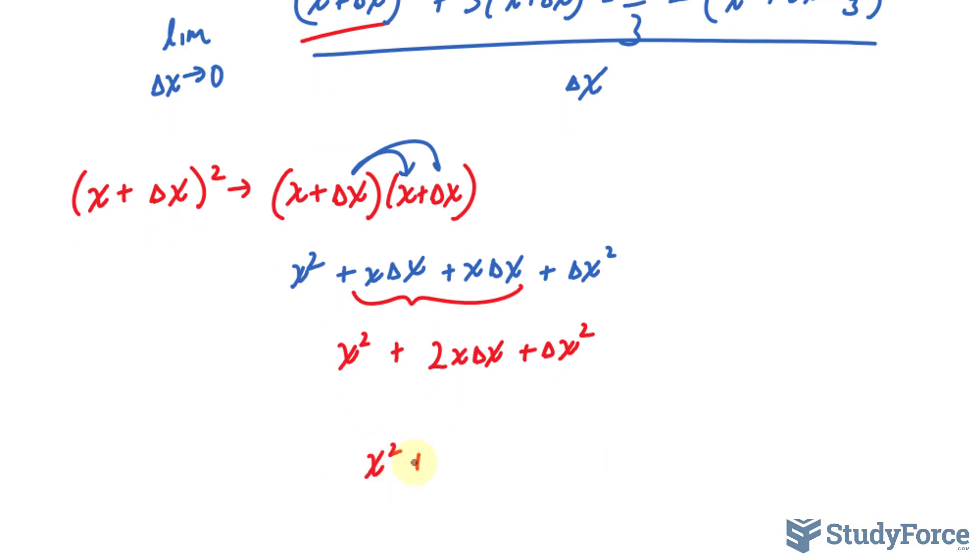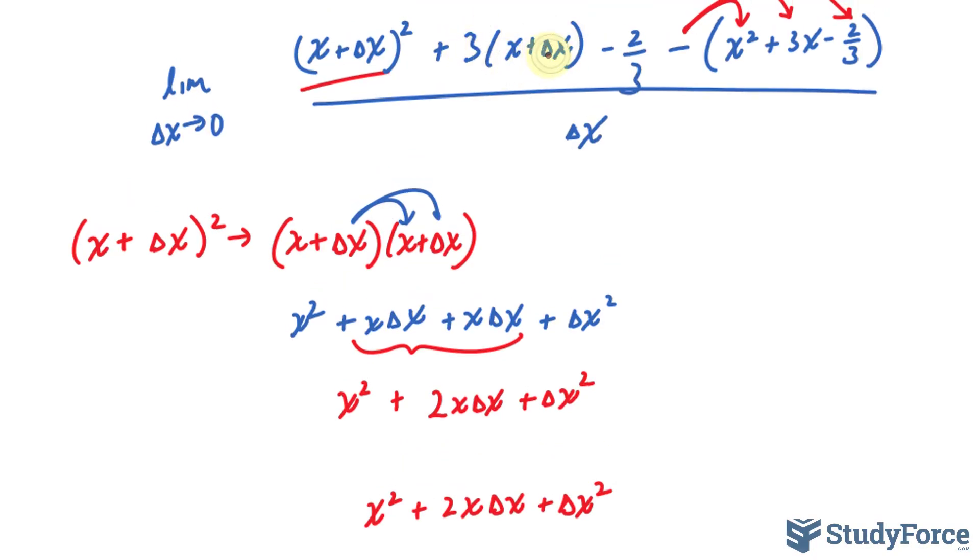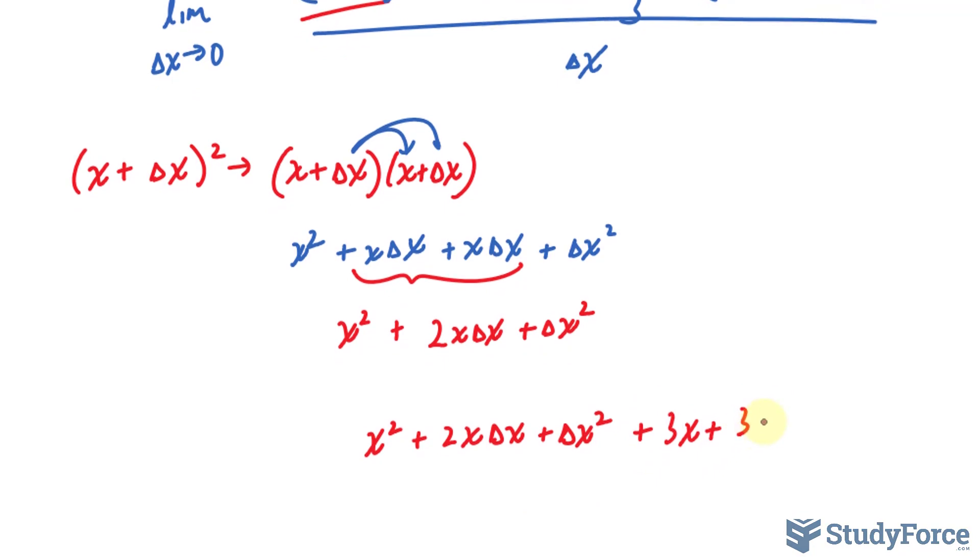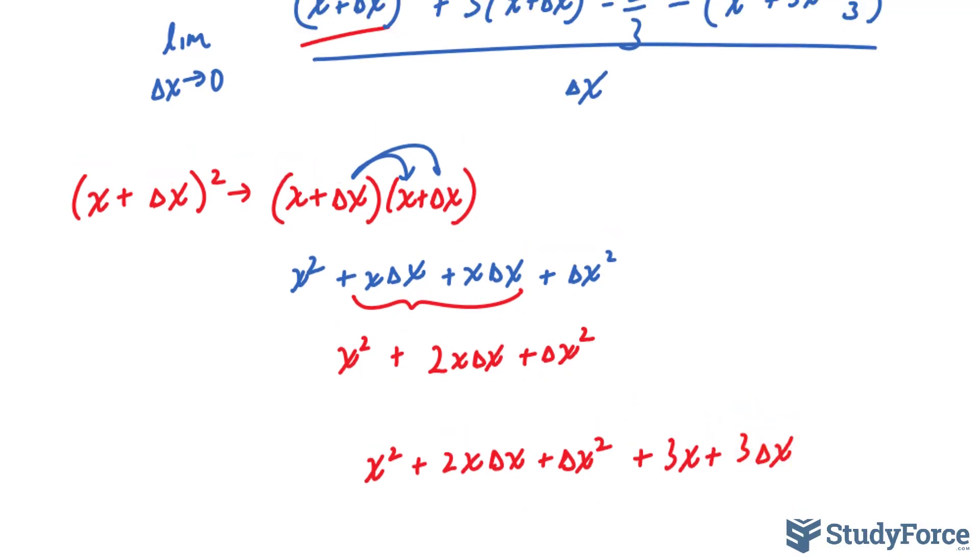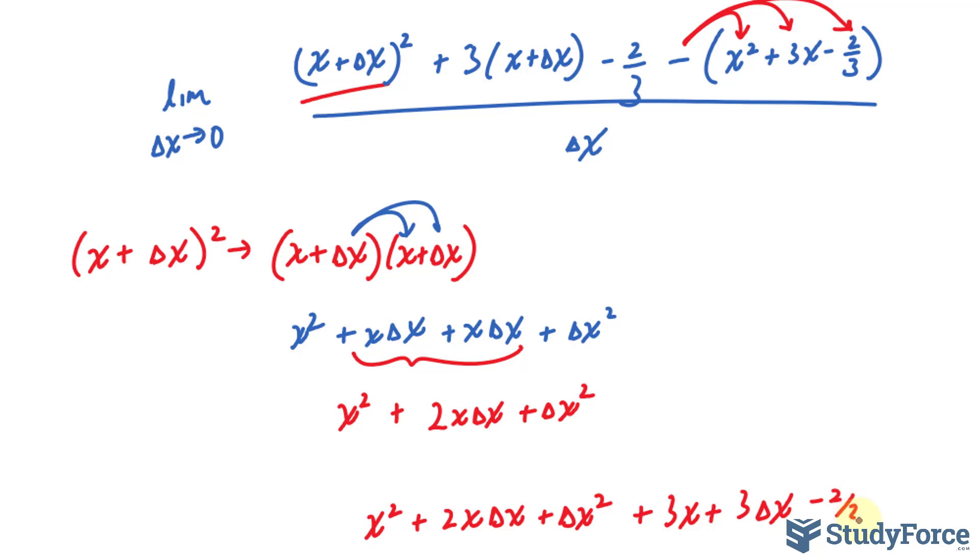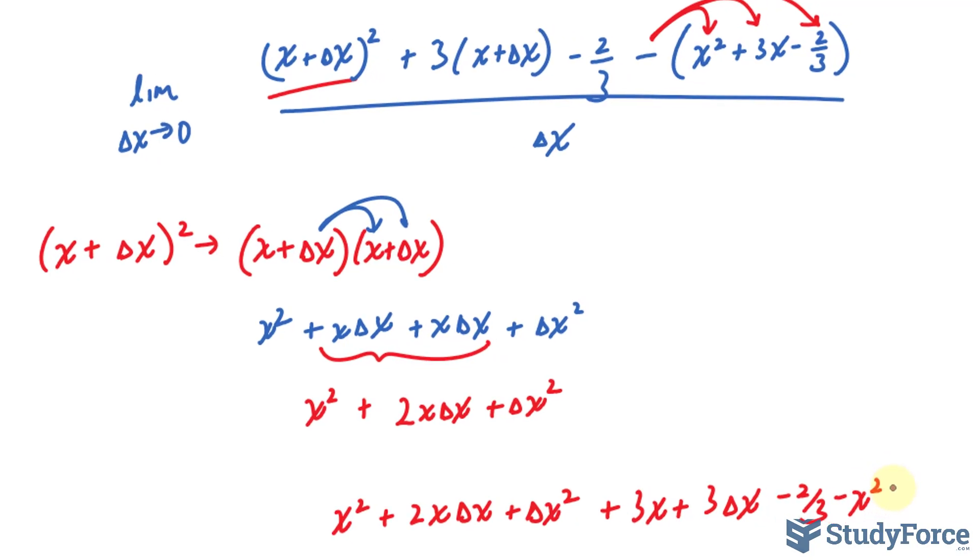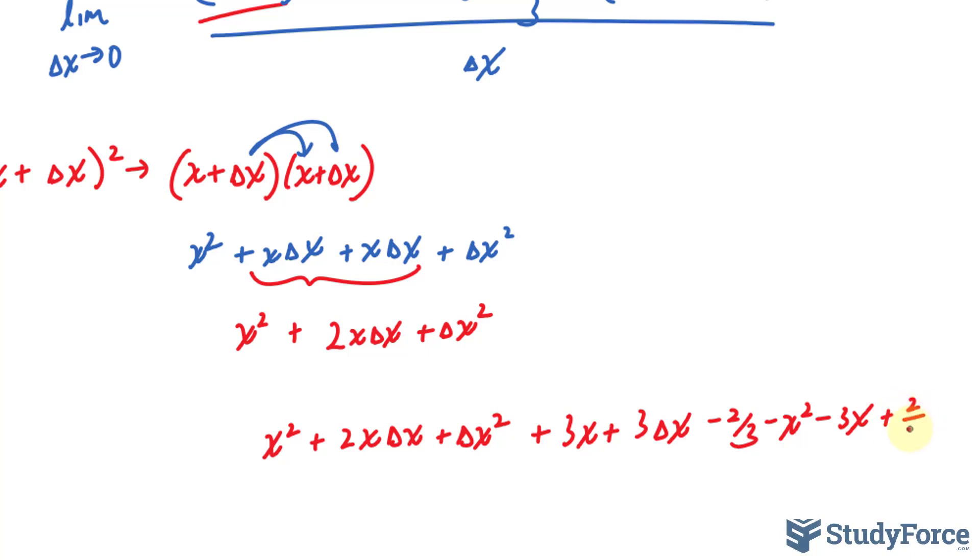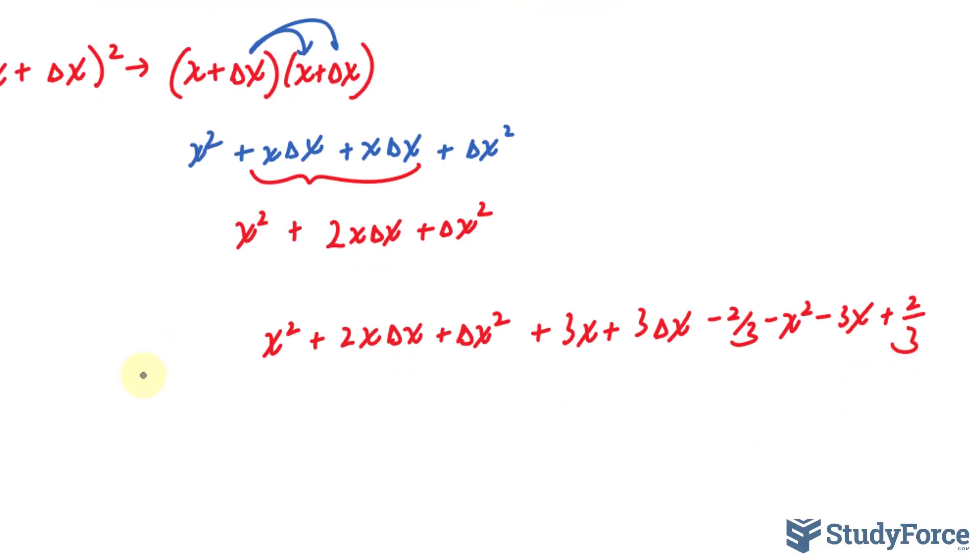We have x squared plus 2x delta x plus delta x squared. And now this part, I'll expand it, so I'll have 3x plus 3 delta x. So 3x plus 3 delta x minus 2 over 3. We're right here right now. And after expanding this part, we have minus x squared minus 3x and plus 2 over 3. So that is the numerator of our limit all over delta x.